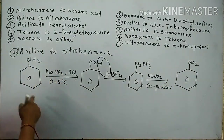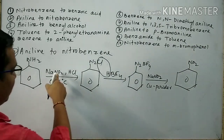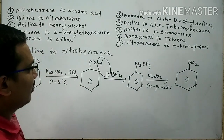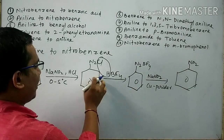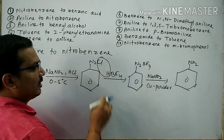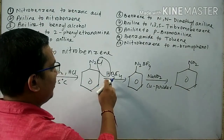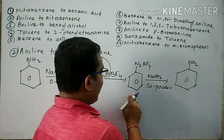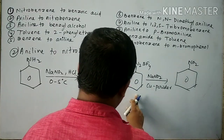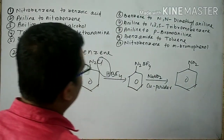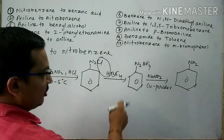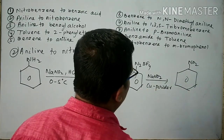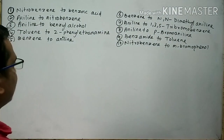To repeat: aniline reacts with NaNO2 and HCl at 0 to 5 degrees centigrade to form BDC. BDC reacts with HBF4 to form benzene diazonium fluoroborate. Benzene diazonium fluoroborate reacts with NaNO2 and copper powder to give nitrobenzene.